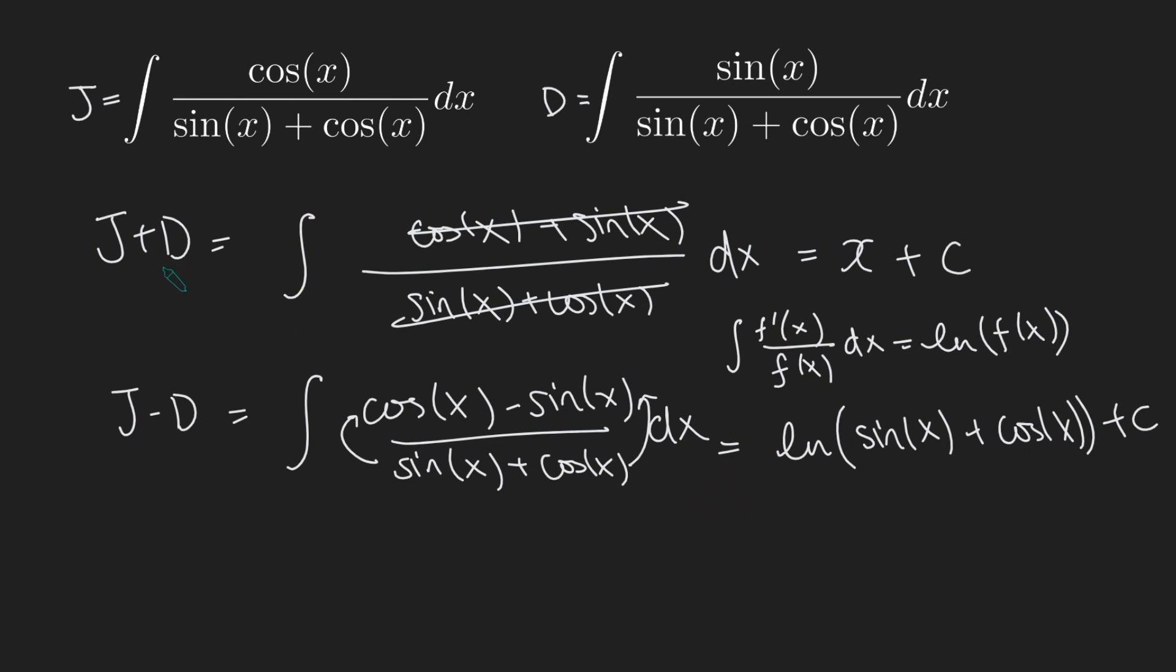We've got what J plus D is. We've got what J minus D is. We've added our douchebag. We've subtracted our douchebag. And now what we're going to do is cancel those two douchebags by adding these two results together. So J plus D plus J minus D, the Ds will cancel and we just get 2J. And on the right hand side, we get x plus ln of sinx plus cosx. And then the two constants will just become another constant. So it's going to be ln of sinx plus cosx plus x plus a constant C.